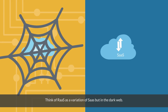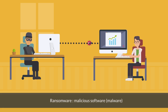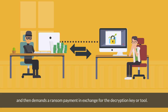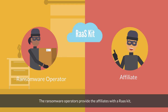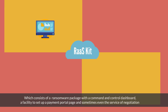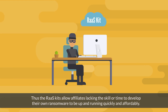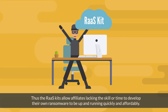Think of RaaS as a variation of SaaS but on the dark web. Ransomware refers to malicious software that encrypts a victim's files or data and then demands a ransom payment in exchange for the decryption key or tool. The ransomware operators provide affiliates with a RaaS kit, which consists of a ransomware package with a command and control dashboard, a facility to set up a payment portal page, and sometimes even a negotiation service with the victim — for a subscription fee, one-time fee, or profit sharing. This allows affiliates lacking the skill or time to develop their own ransomware to be up and running quickly and affordably.